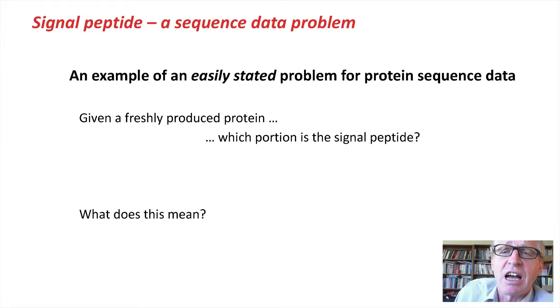We're going to look at a very easily stated sequence problem for proteins. It goes like this: given a freshly produced protein, which portion of it is the signal peptide? Now what does this mean?